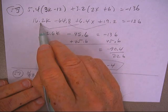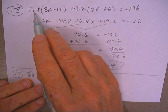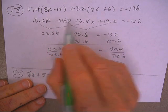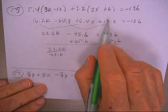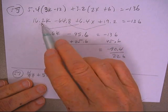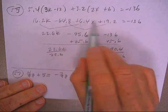5.4 times 3 is this one. 5.4 times negative 12 is that one. 3.2 times 2. 3.2 times 6. Then do those two together and these two together.